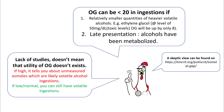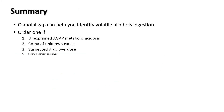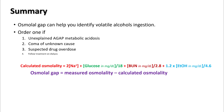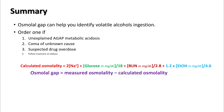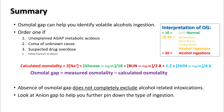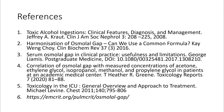A skeptical review of osmolal gap can be found via the referenced link. In summary, osmolal gap can help identify volatile alcohol ingestions — order one if you see unexplained anion gap metabolic acidosis, coma of unknown cause, or suspected drug overdose or suicidal attempt. Calculated osmolality is given by 2 × sodium + glucose/18 + BUN/2.8. Use a correction factor for ethanol if suspecting multiple alcohol overdose. Osmolal gap equals measured minus calculated osmolality; less than 10 is normal, more than 20 is usually seen in alcohol ingestions. Absence of osmolal gap does not completely exclude alcohol-related intoxication — always look at the anion gap to help pin down the type of ingestion.